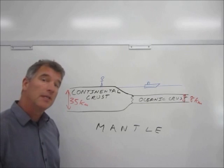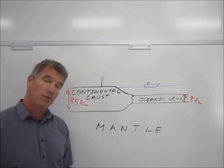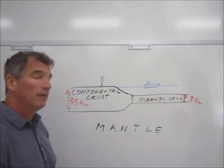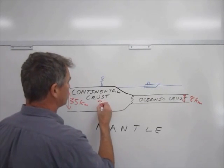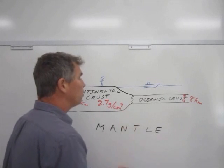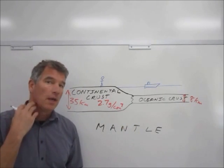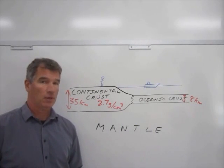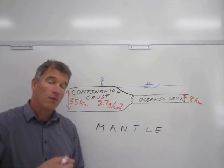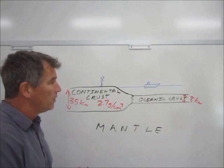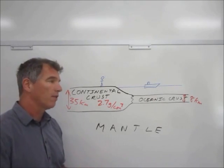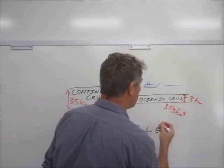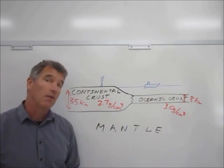There's another important difference, which is in their density. The continental crustal rock — rock like granite and its relatives — is a relatively low-density rock. Its average density is about 2.7 grams per cubic centimeter. Think about water: water is about 1 gram per cubic centimeter, so continental crustal rock is about 2.7 times heavier than water for a given volume. The oceanic crust is made of different minerals and is a little denser — about 3 grams per cubic centimeter, or about 10% denser than the continental crust.